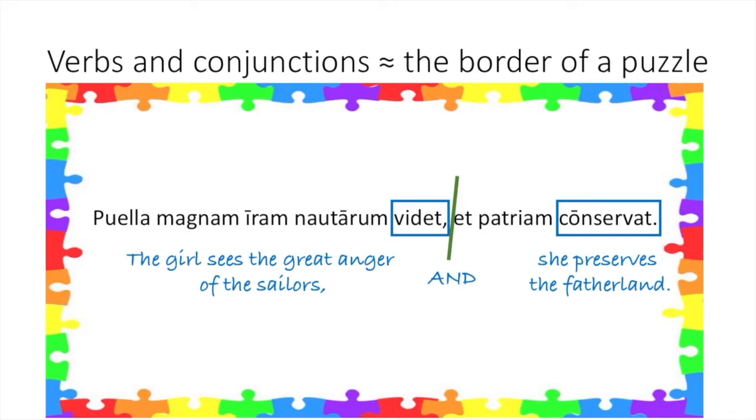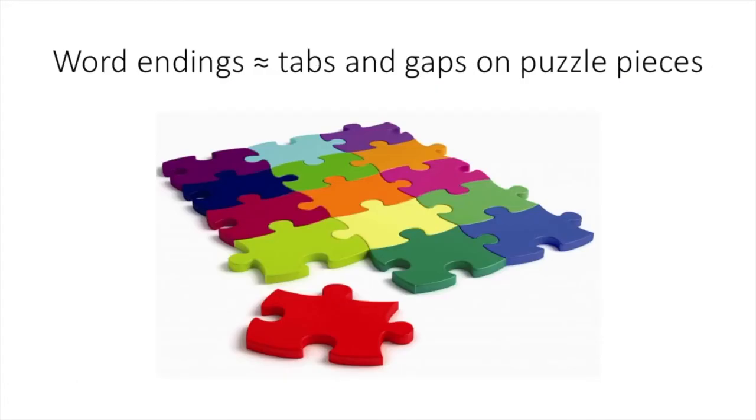Another common strategy for completing puzzles is to connect pieces based on the images, to complete a recognizable image or shape, and then proceed to fill out the puzzle. This process is most like reading a Latin sentence from left to right, as they were originally written. You use the vocabulary, word endings, and your knowledge of what words relate to each other in order to gradually develop your understanding of the Latin sentence.